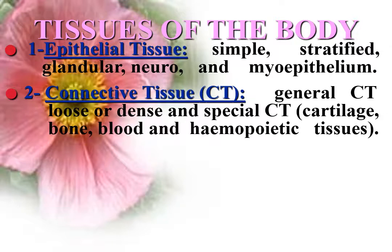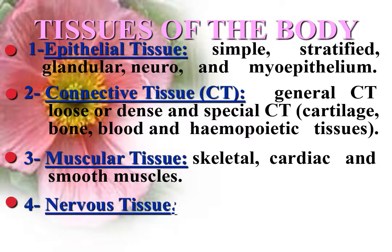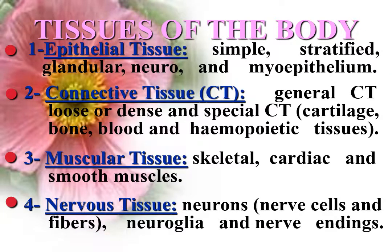Connective tissue types include: general connective tissue, which may be loose or dense; and special connective tissue, which includes cartilage with rigid matrix, bone with calcified matrix, blood with fluid matrix, and hemopoietic tissues. Muscular tissue is formed of three types: striated voluntary skeletal muscle, striated non-voluntary cardiac muscle, and non-striated non-voluntary smooth muscle. Nervous tissue is formed of neurons composed of nerve cells and nerve fibers, supporting cells called neuroglial cells, and nerve endings.